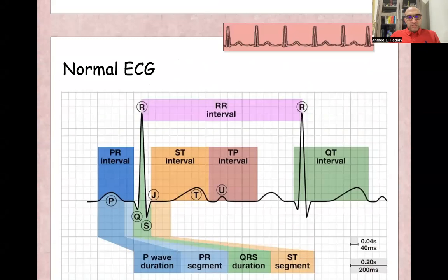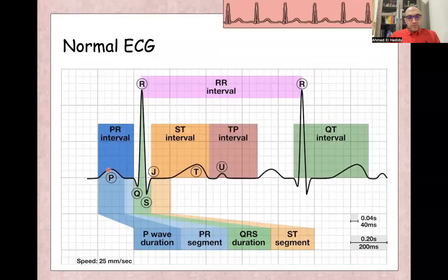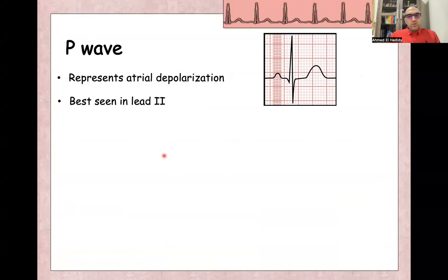Normal ECG consists of many waves: P wave, Q wave, R wave, S wave, T wave, and U wave, and we'll discuss each wave alone in next slides.